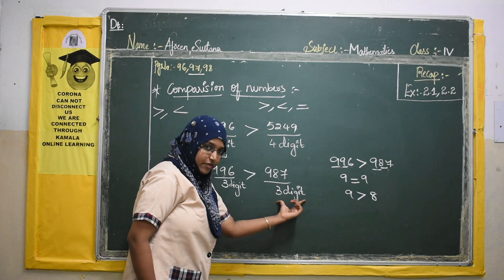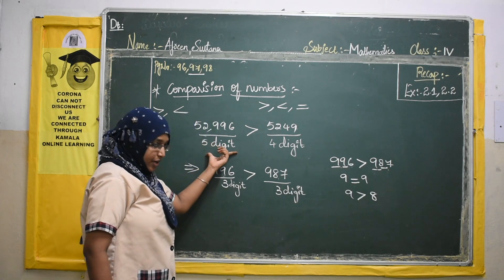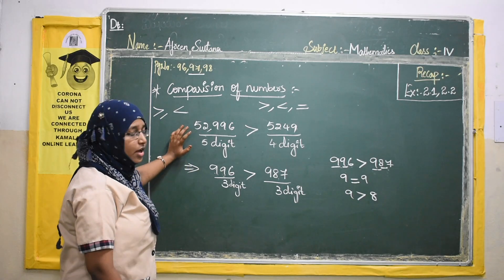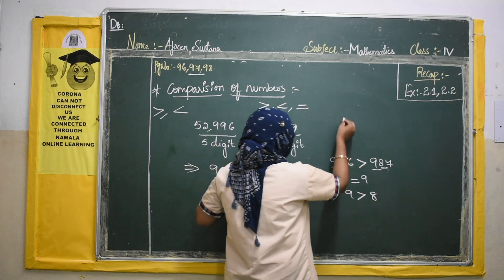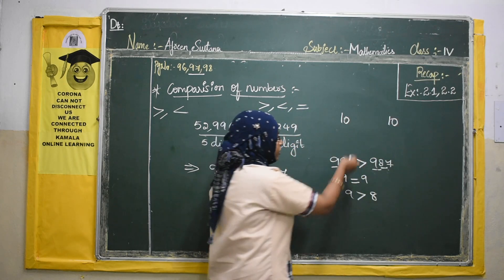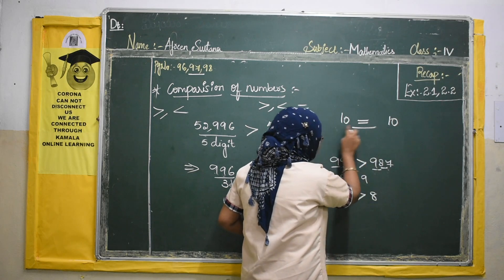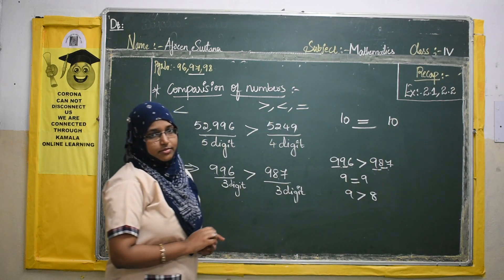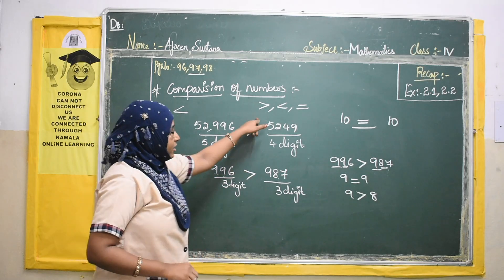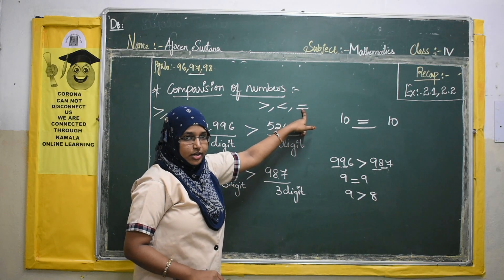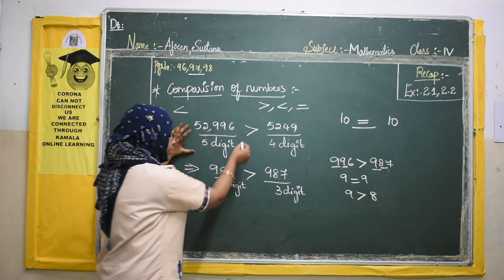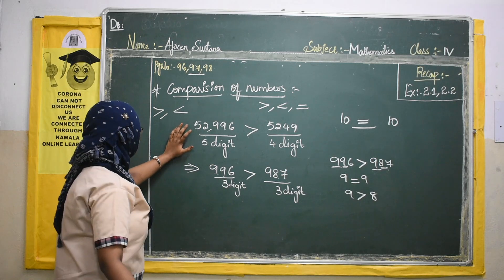This is comparison of numbers when the digits are equal in count. When equal number of digits are given, you compare digit by digit from left to right. If at any position the digits are also equal, move to the next digit. If both numbers are entirely equal, for example 10 equals 10 or 100 equals 100, we write the equal-to symbol.